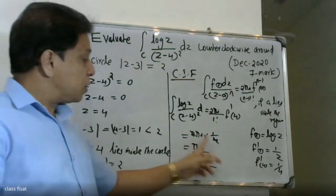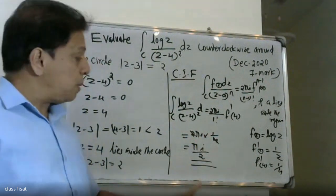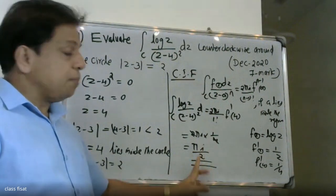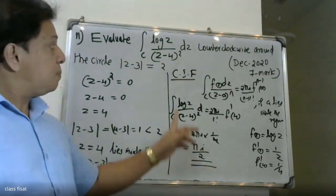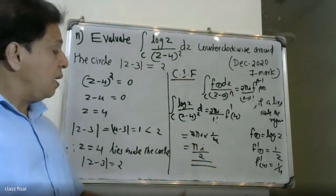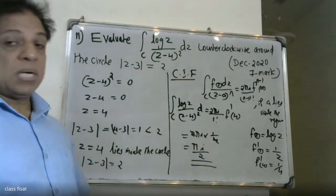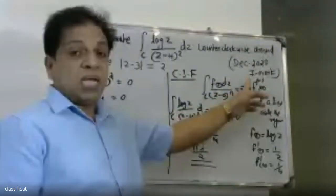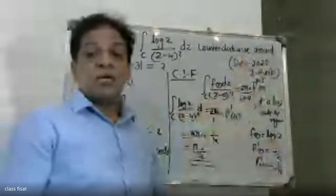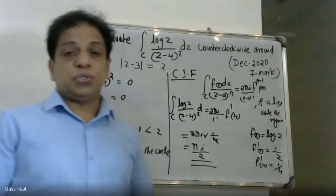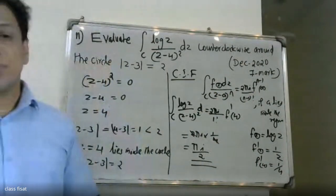Simplifying 2πi times 1/4 gives πi/2. So the final answer is πi/2. Therefore the value of the integral is πi over 2.